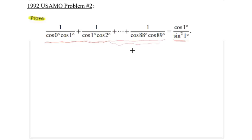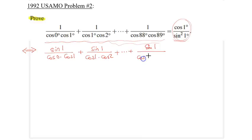Before I begin, I will multiply both sides of the equation by sine 1 so that it looks better, more symmetric. So we have sine 1 over cosine 0 times cosine 1 degrees, plus sine 1 over cosine 1 times cosine 2 degrees, all the way to sine 1 over cosine 88 times cosine 89 degrees.